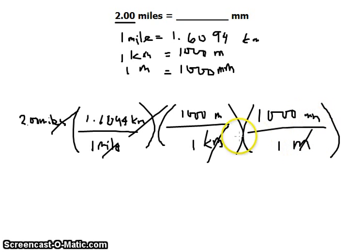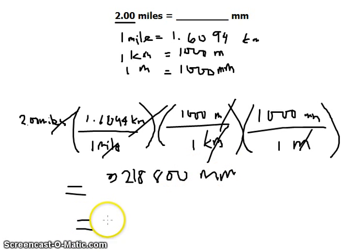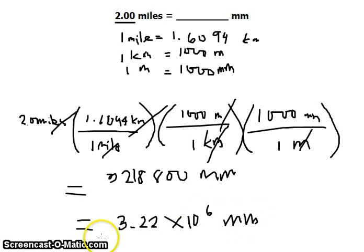The meter unit cancels out. If you calculate that, you get 3,218,800 millimeters. But that's not our final answer. We need to round it to three significant figures, so our final answer is 3.22 times 10 to the 6 millimeters. And that's our answer.